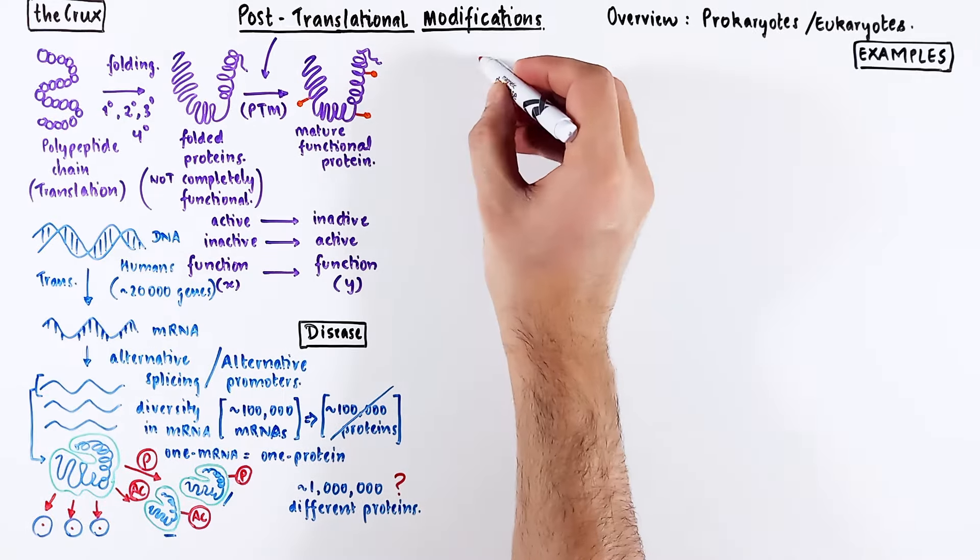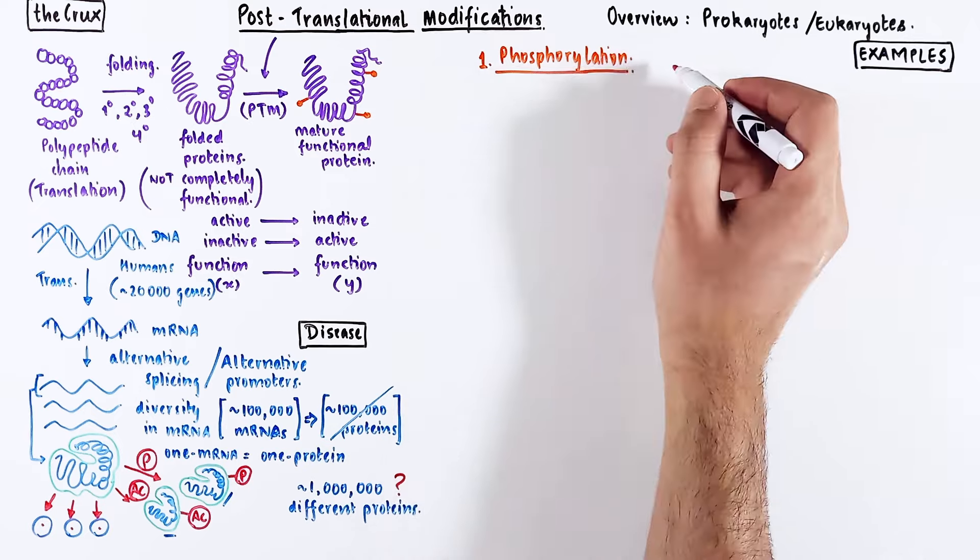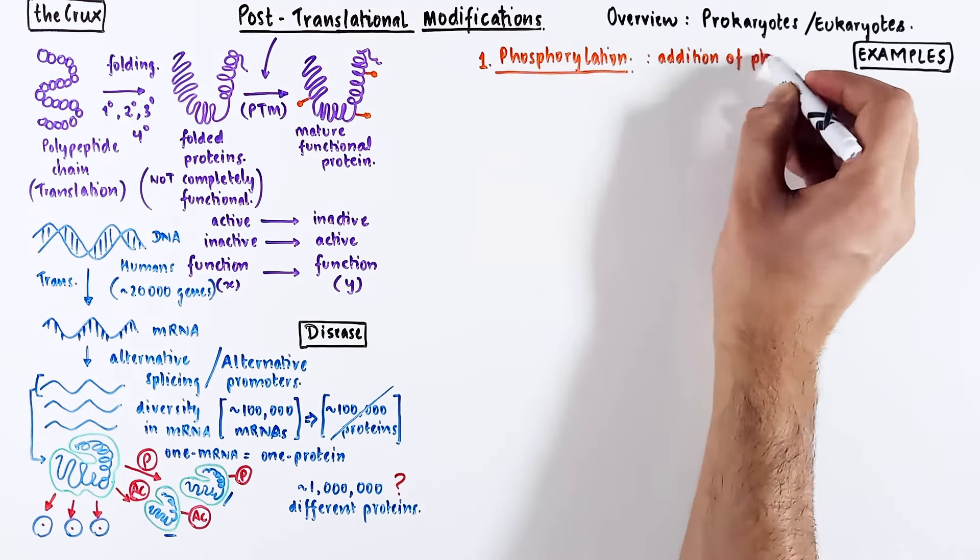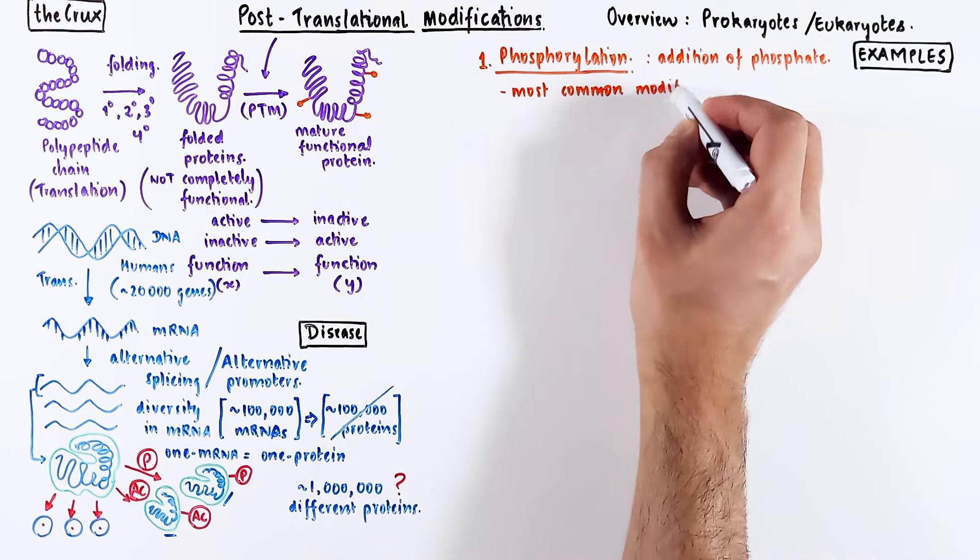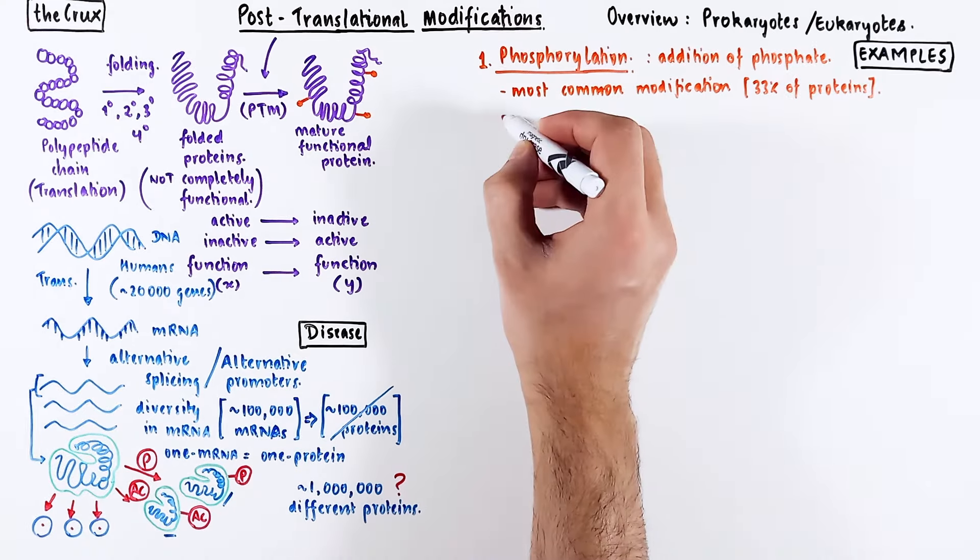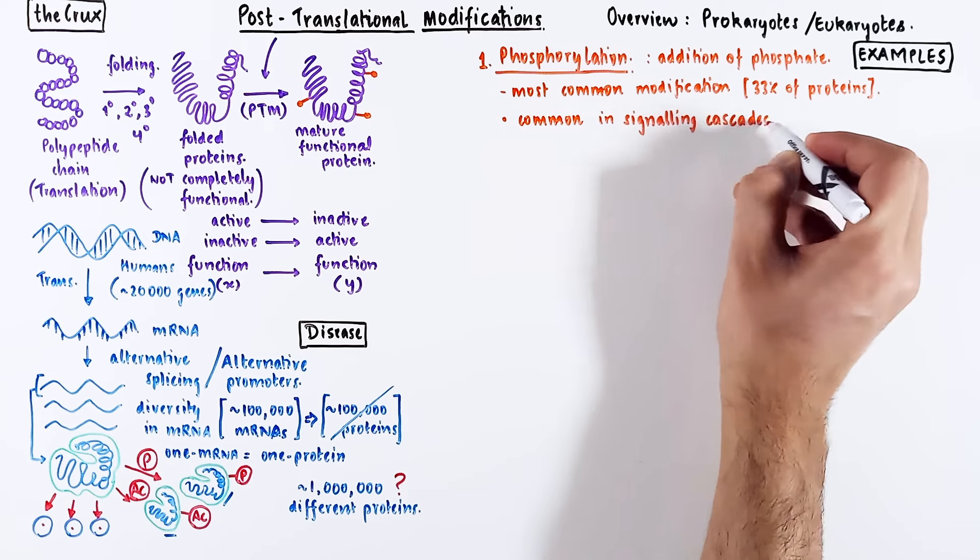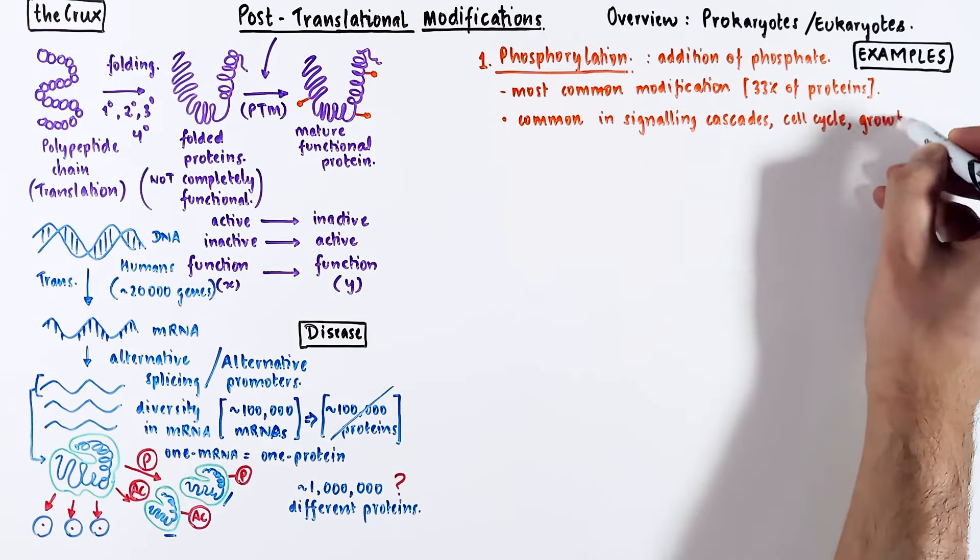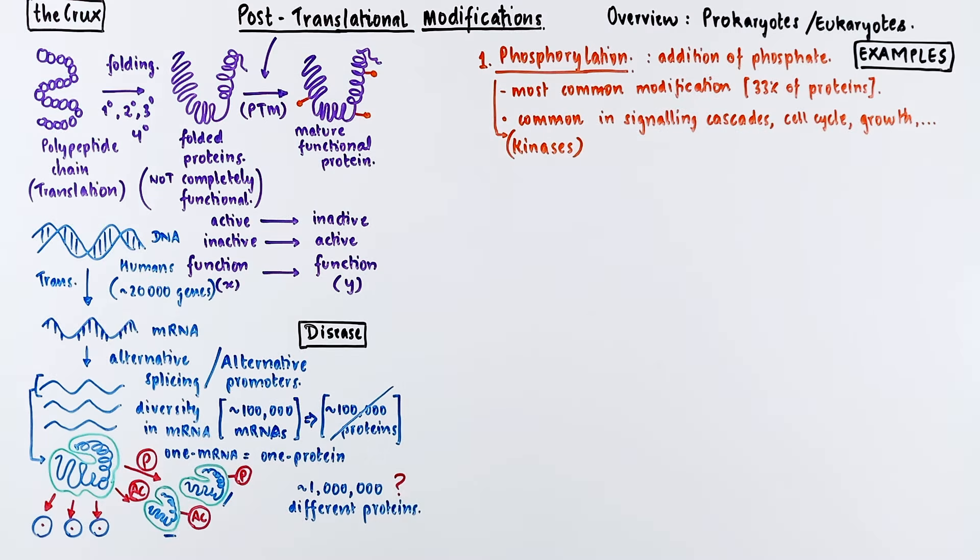Let's dive into the first modification: phosphorylation. As the name suggests, this is where a phosphate is added to a protein. This happens to be the most common modification. Around 33% of eukaryotic proteins have this modification at some point. This modification is commonly used in signaling pathways, cell cycle, growth proteins, and many other functional proteins. The enzyme responsible for this modification is called kinase.